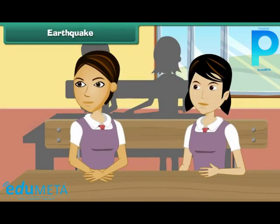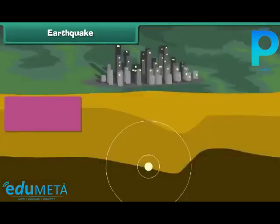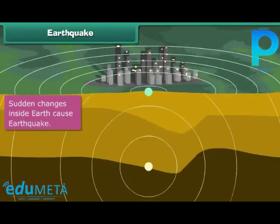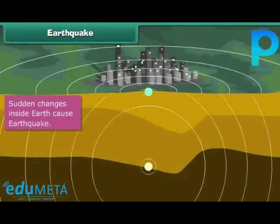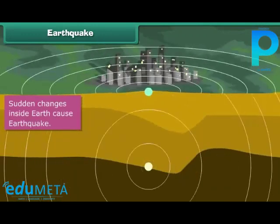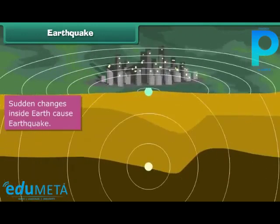Earthquake. How does an earthquake occur? When there is a sudden change deep inside the earth, it shakes the earth's crust, causing an earthquake.